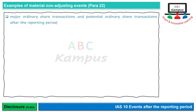Major ordinary share transactions اور potential ordinary share transactions: ordinary share transactions جیسے bonus shares issue کرنا، right shares issue کرنا، یا IPO۔ Potential ordinary shares جیسے share options یا convertible debentures — یعنی ایسے debentures جو future میں shares میں convert ہوں گے۔ یہ shareholders کی understanding کے لیے relevant ہوتے ہیں، ان کی decision کو influence کرتے ہیں، اور انہیں material consider کیا جاتا ہے۔